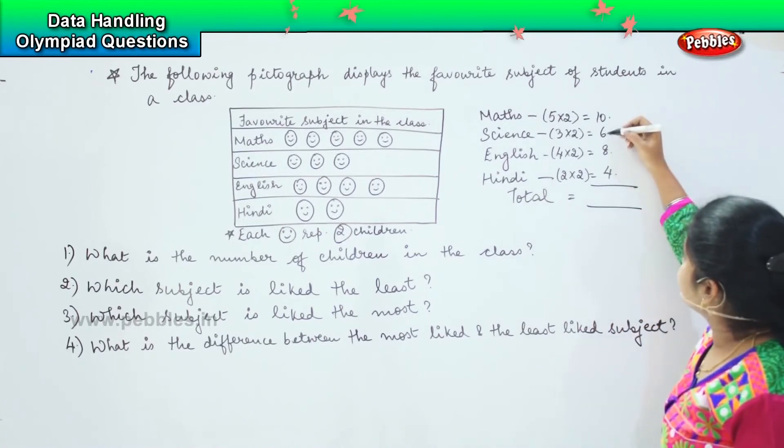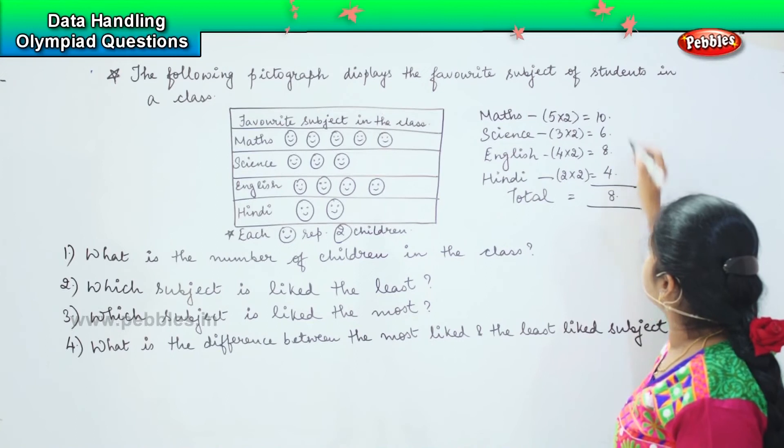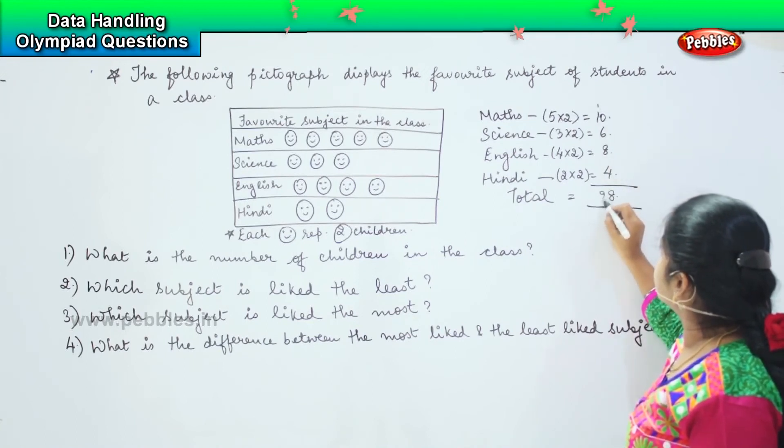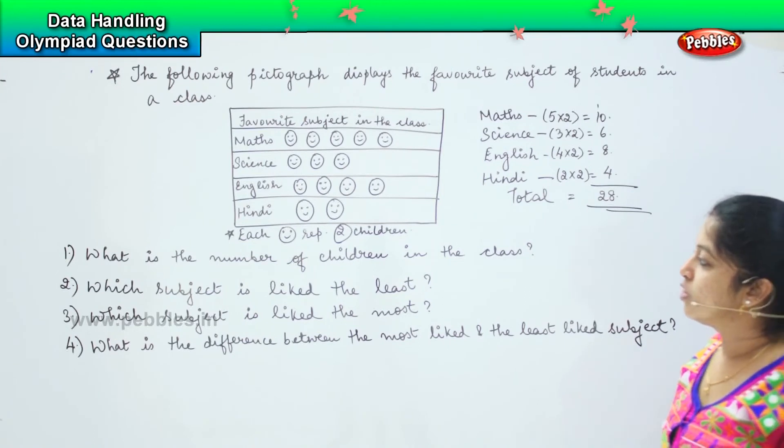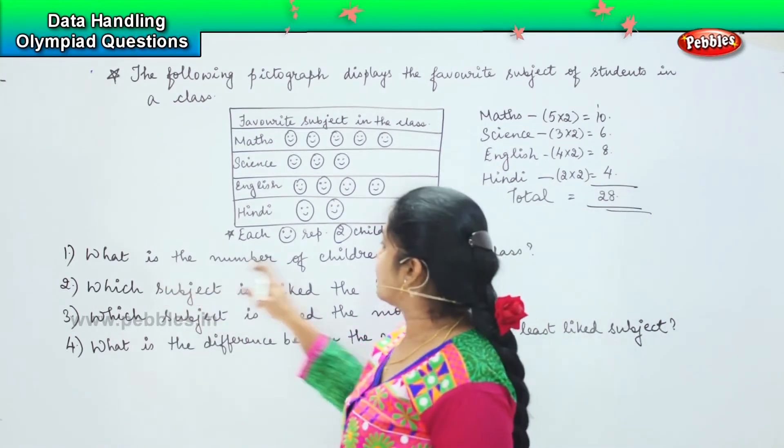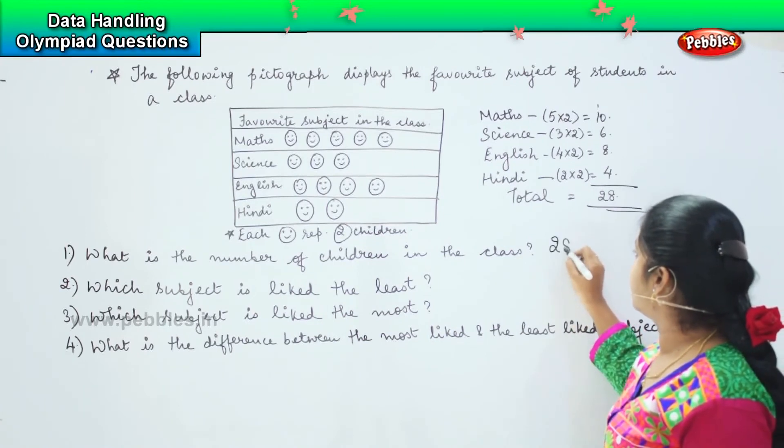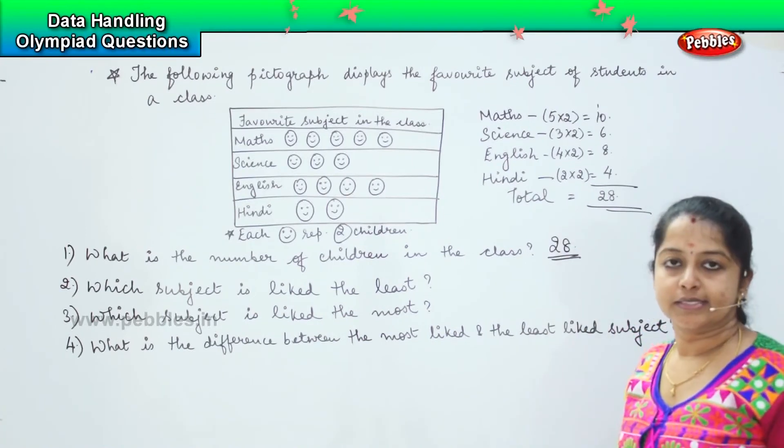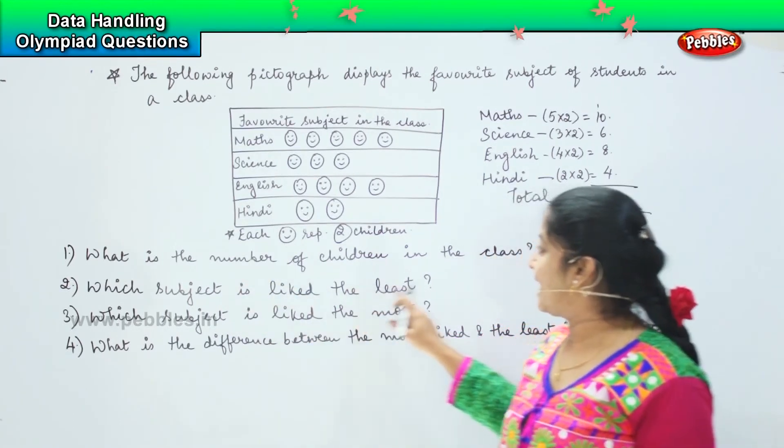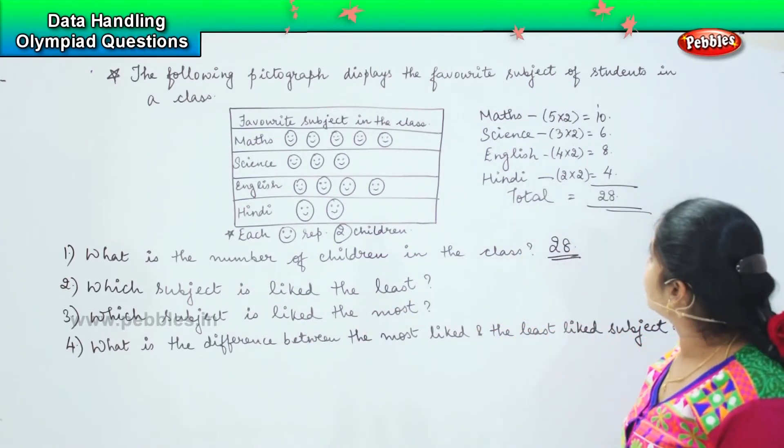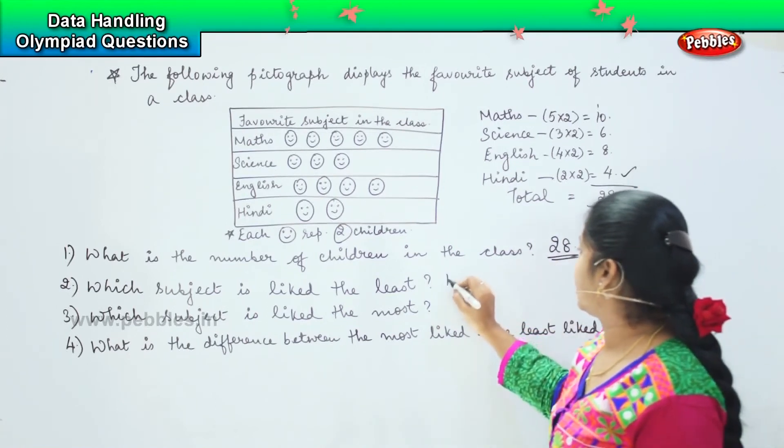So ten plus six is sixteen, sixteen plus eight is twenty-four, twenty-four plus four is twenty-eight. So there are twenty-eight children in class. The first question: what is the number of children in the class? We have already found out, so it is twenty-eight. Next question, which subject is liked the least? Four is the least number, so it is Hindi.